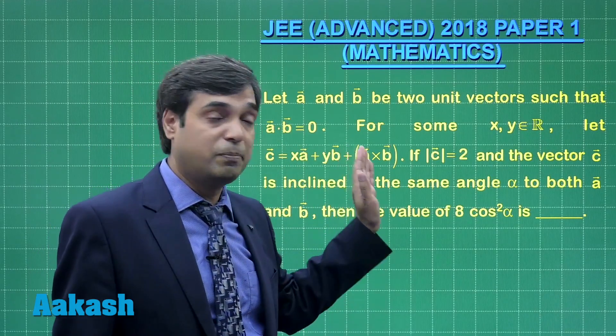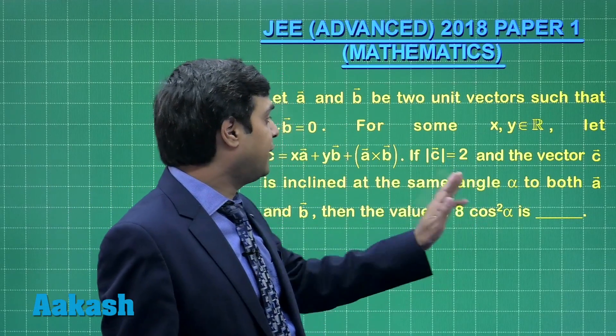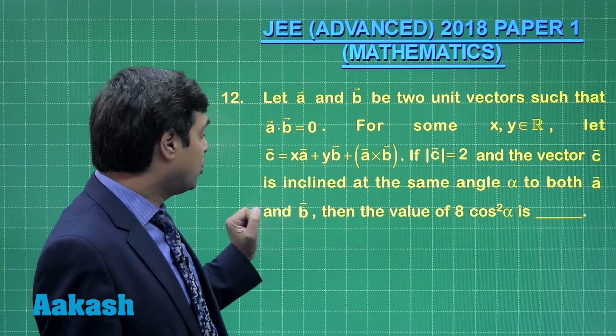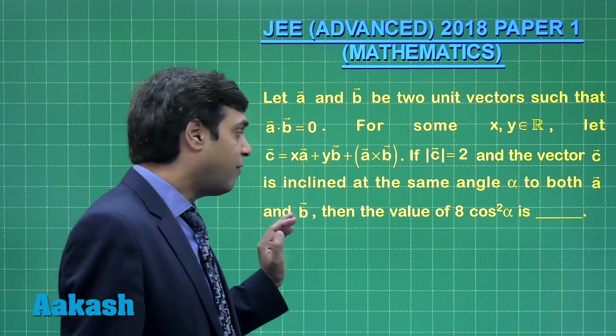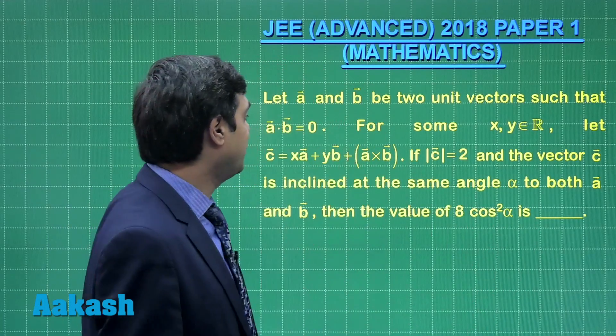Let c vector is defined as x a vector plus y b vector plus a cross b vector. If modulus of c vector is 2, and the vector c is inclined at the same angle alpha to both a and b, then find the value of 8 cos square alpha. This is what we have to do in this question.